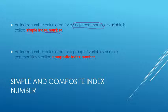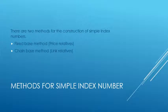So you can see that there is one variable in a simple index number, and there are more variables or commodities in a composite index number. Now we are going to discuss the method for calculating a simple index number. There are two methods: one is called the fixed base method and the other is called the chain base method. For the fixed base method we calculate price relatives, and for the chain base method we calculate link relatives.